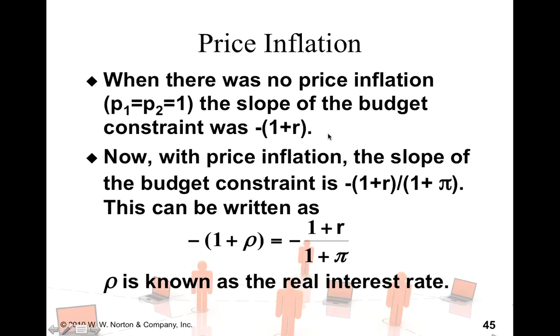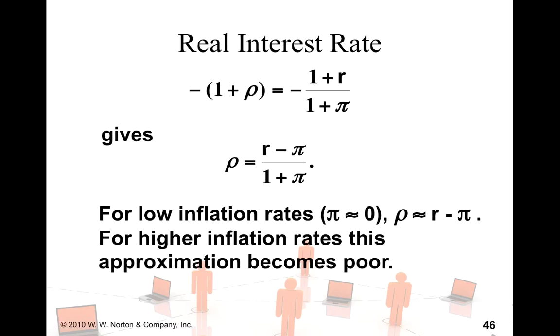Without inflation, the slope was minus 1 plus r and now it is minus 1 plus r divided by 1 plus pi. Let's call this as price inflation. And let's say that this ratio is equal to 1 plus rho and rho here is going to become the real interest rate. So, once you solve everything, you basically get rho is equal to r minus pi divided by 1 plus pi.